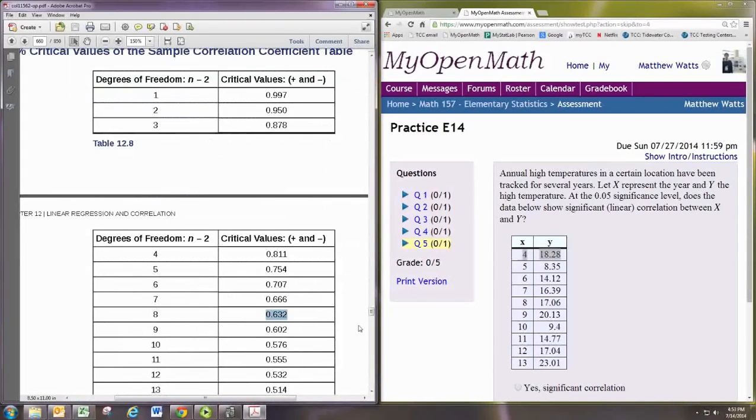That means if our correlation coefficient is larger than that we do have significant correlation. If it's smaller then we do not.